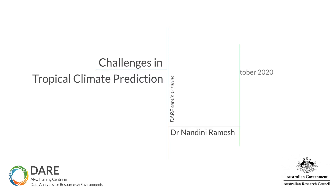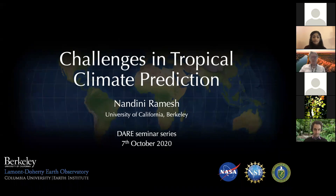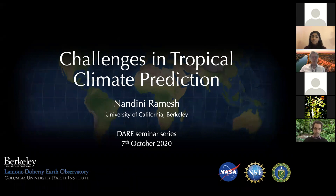It gives me great pleasure today to introduce Nandini Ramesh. Nandini has accepted a position as a postdoctoral researcher in DERA and we're very much looking forward to her physical presence sometime early next year. Currently Nandini is in the Department of Earth and Planetary Sciences at UC Berkeley and her research focuses on decadal climate variability and the role of the ocean in climate in the tropics, which is very relevant for Australia. She received a PhD from Columbia University, a master's in earth physics from ANU, and a bachelor of science from the University of Madras.